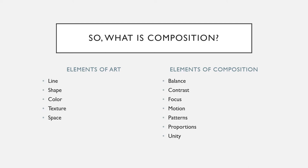So what is composition? Well, we have elements of art: line, line width, line depth, shapes, colors, textures, the use of space, positive space, negative space.